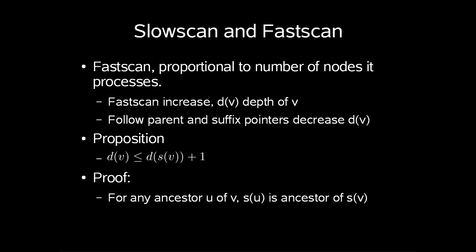Next is the rescanning known as fast scan. What is the time usage? Well, fast scan uses time proportional to the number of nodes it processes. So we define d(v) as the node depth of the node v. Fast scan increases the node depth. Following parent and suffix pointers decrease the node depth. We have the time usage of fast scan is bounded by the total depth increases. This will require us to do an amortized analysis. For this we will need a proposition about how much the depth will actually be. So we state that the depth of a node v is less than or equal than the depth of the suffix link of v plus 1.